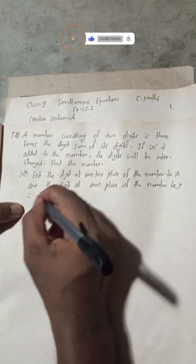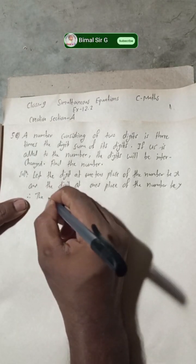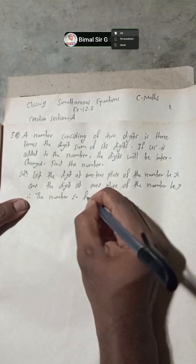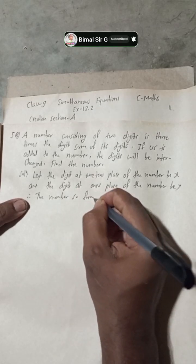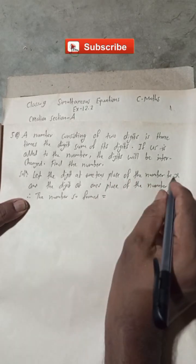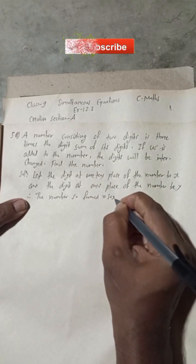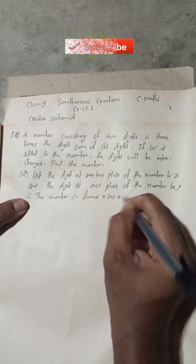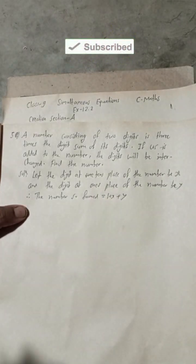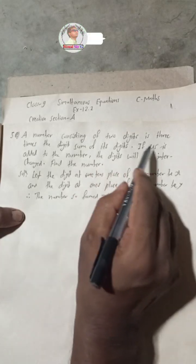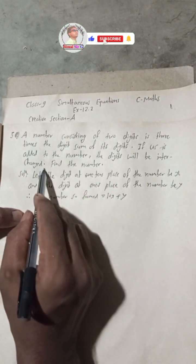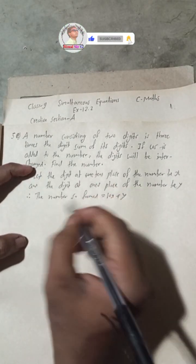Therefore, the number formed is: tens place gives 10x, and ones place gives y, so the number is 10x + y. Now, if 45 is added to the number the digits will be interchanged.